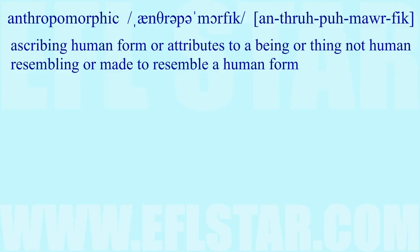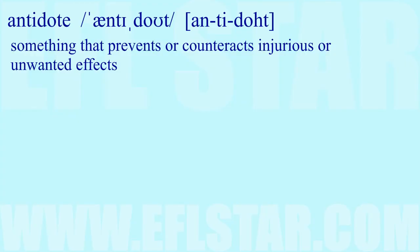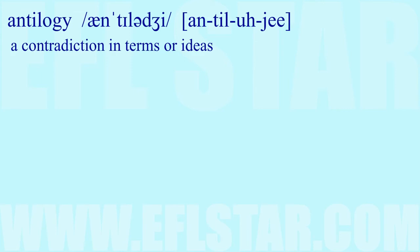Anthology: a collection of works by one author or musical artist. Anthropomorphic: ascribing human form or attributes to a being or thing not human; resembling or made to resemble a human form. Antidote: something that prevents or counteracts injurious or unwanted effects. Antilogy: a contradiction in terms or ideas.